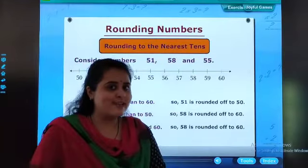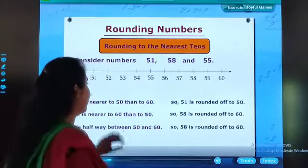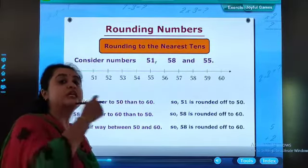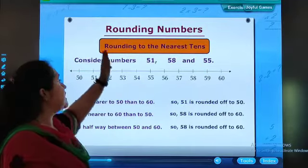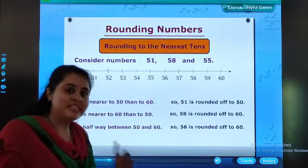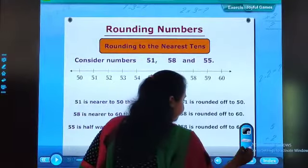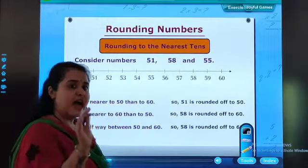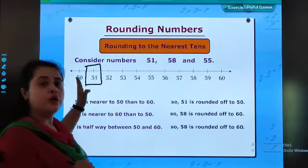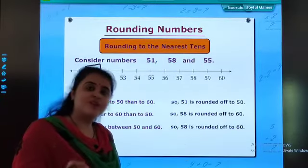Students, one shortcut. Here, there are some numbers in which you need to do the rounding to the nearest tens. Numbers are 51, 58, and 55. As you can see, this 51 is nearer to 50. So, I can say 51 is rounded off to 50.